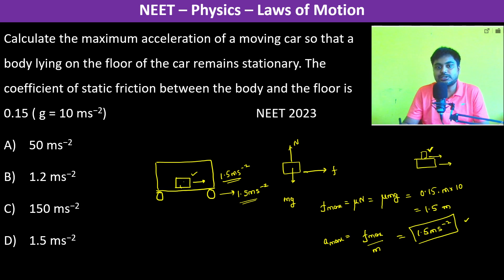Since it is remaining stationary, it means that there is no slipping. No slipping means that the acceleration is the same. Therefore the answer is D, 1.5 m per second square.